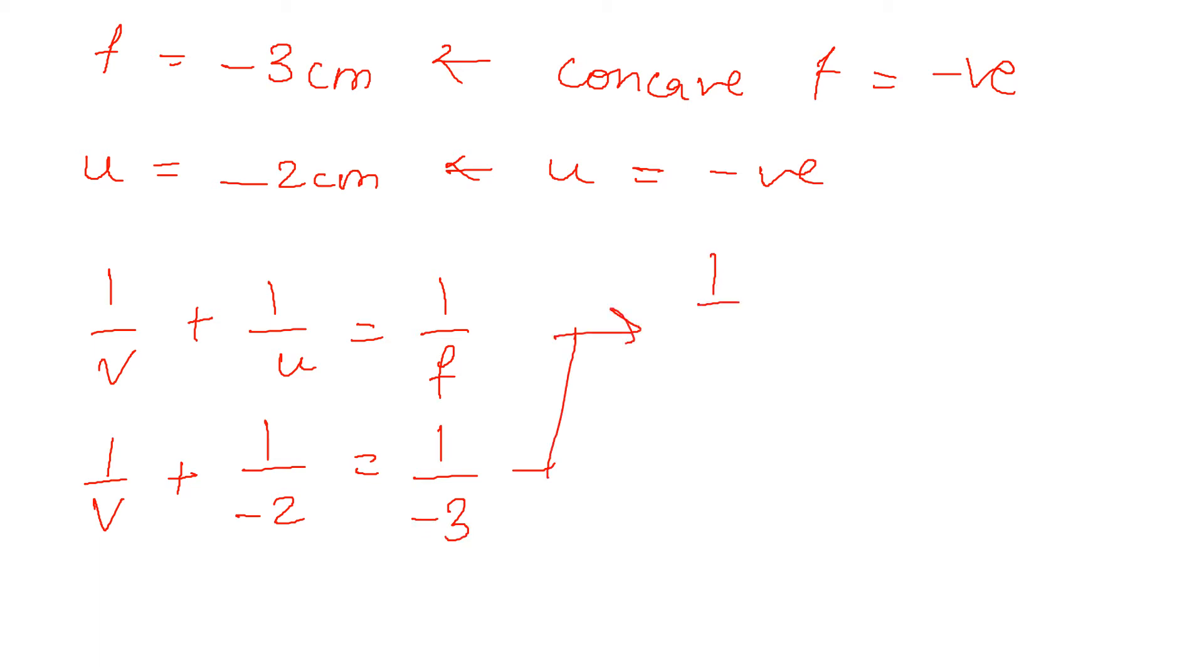Now we are going to solve it. 1/v = -1/3 - (-1/2) = -1/3 + 1/2. This equals -2/6 + 3/6 = 1/6.